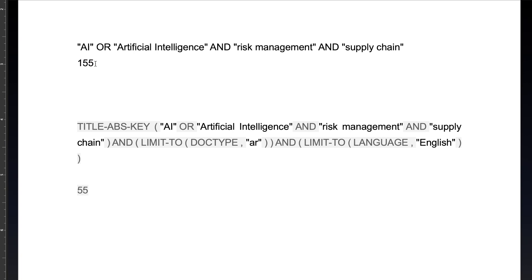As I mentioned in my previous module, we need to use the Goldilocks test in order to identify whether our research question is appropriate or not. Based on the Goldilocks test, my research question was qualified, and I used these keywords and extracted 155 records from the Scopus website. These 155 records were the initial records.